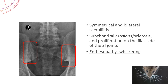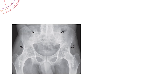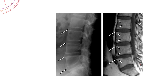If sacroiliitis is allowed to progress, it will end up with narrowing and fusion of the joint, as seen in this picture where you cannot find any sacroiliac joint. Even the bilateral hip joints are fused.